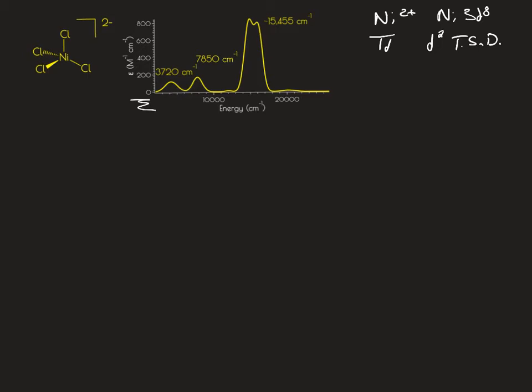The second thing to point out is that oftentimes for these D2D bands, you'll see some splitting owing to spin-orbit coupling and other effects. So for this transition here, we're taking the energy as the average of those two peaks that have been split.